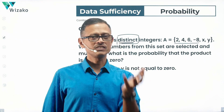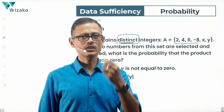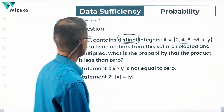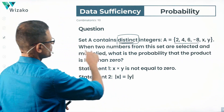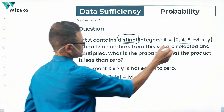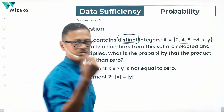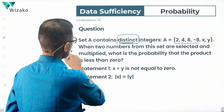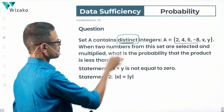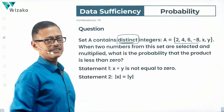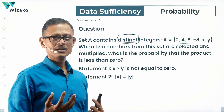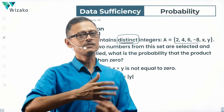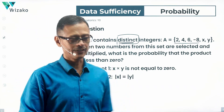X and Y could be positive, negative, or zero — one of those two could be zero, but not both. When two numbers from the set are selected out of the six numbers and multiplied, what is the probability that the product is less than zero? Essentially we need to compute the probability that the product is negative.